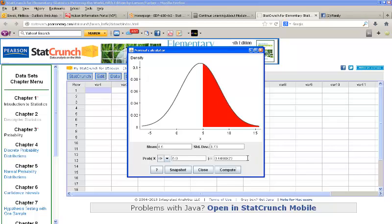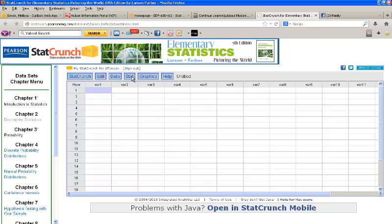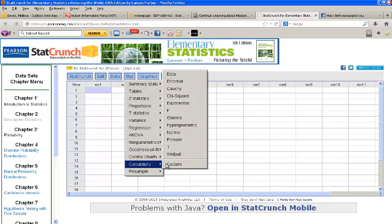Now, we can also use this to do an inverse lookup. So let's say we're given a probability and we want to know the number that generates that probability. Let me close this for a second and open it again. So again, stat, calculators, normal.